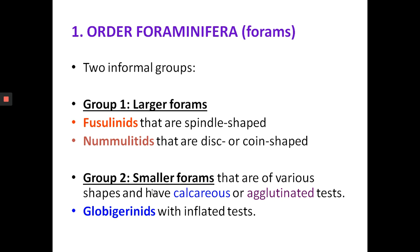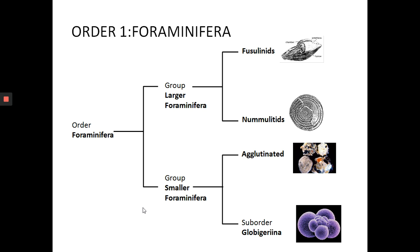In this class, you need to know two main groups of forams — informal groups, not formal taxonomic groups. You have the larger forams, called larger forams because they are relatively larger based on size, and then the smaller forams. The larger forams are divided into the fusulinates — spindle-shaped forams — and the coin-shaped nummulitids. In the smaller forams group, you need to know the agglutinated forams and the globigerinates.